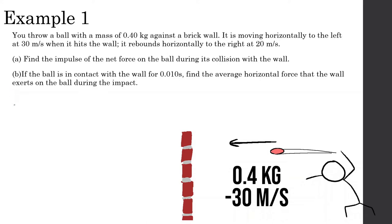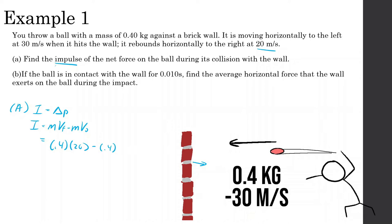For part A, impulse equals the change in momentum, so impulse equals mass times velocity final minus mass times velocity initial. The mass is 0.4 kilograms. When it rebounds, it's going 20 meters per second to the right, so positive 20. Just before it hits the wall, it's going 30 meters per second to the left, so negative 30. So we get 0.4 times 20 plus 0.4 times 30, which gives us 20 kilogram·meters per second.